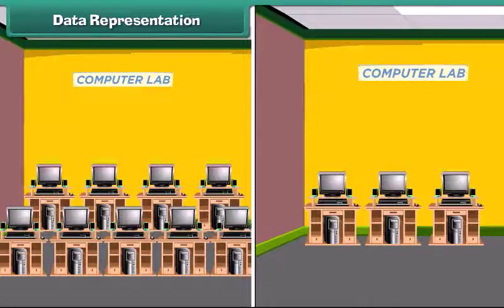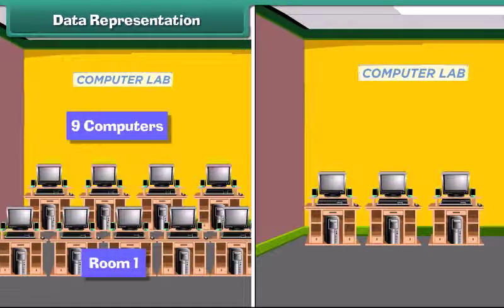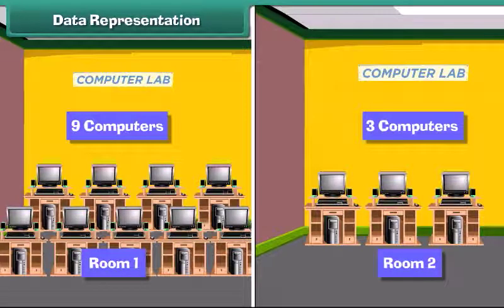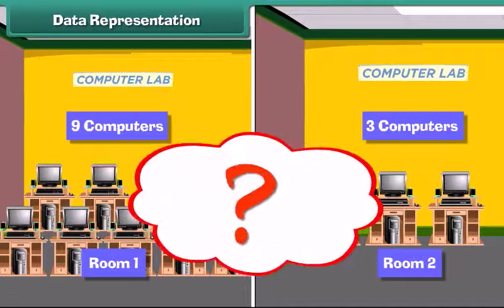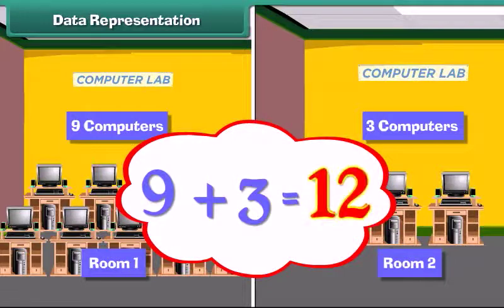Look at the diagram that shows the arrangement of computers in your computer school. Look at the plan and then answer the questions that follow. How many computers are there in room 1? There are 9 computers in room 1. How many computers are there in room 2? There are 3 computers in room 2. How many total computers are present in school? There are total 12 computers in the school.